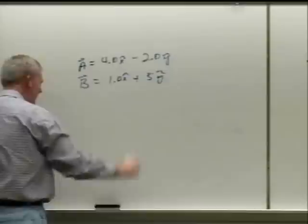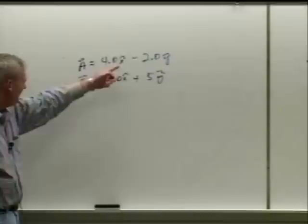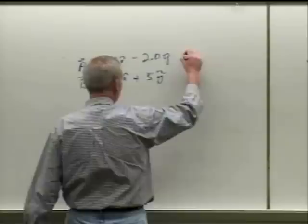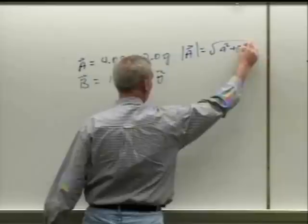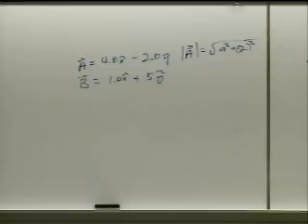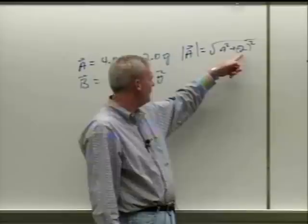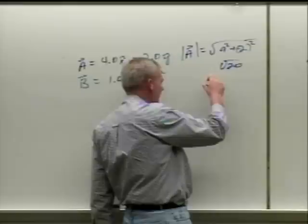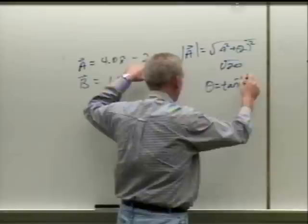The first problem asked for the magnitude and direction of each vector. The magnitude of A equals the square root of 4 squared plus negative 2 squared. Some got the square root of 12 — no. When you square negative 2, it becomes positive, so you get the square root of 20.